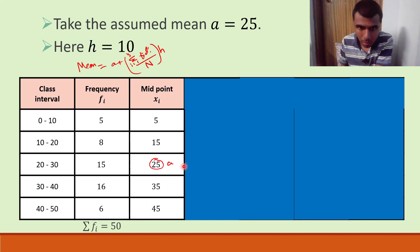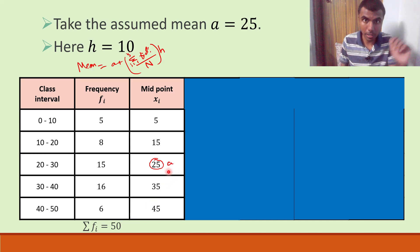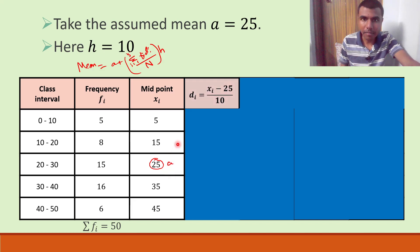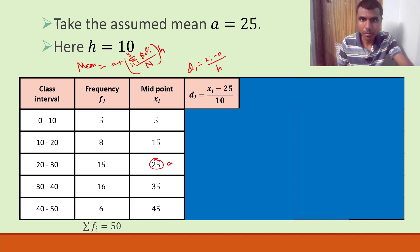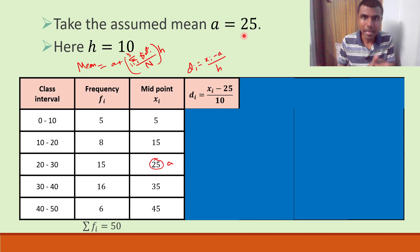Now with that being the case, we have a. Next, the di formula: di = (xi - a) / h. Since a is 25 and h is 10, di = (xi - 25) / 10 for each row.